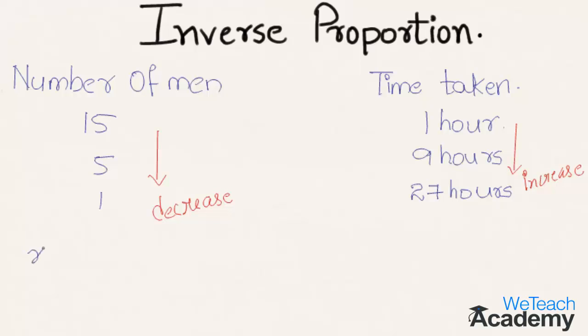Now let us see two quantities x and y. Here, x is inversely proportional to y, which can be represented as x proportionate to 1 by y. This is the condition for inverse proportion.